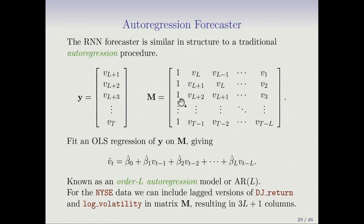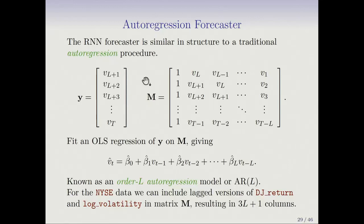We build up a model matrix with an intercept. For each VT, we have VT−1 as a feature, VT−2 as a feature, up to VT−L. Going to the next time point back, you get the same things one time step back, until the response VL+1 has features VL, VL−1, down to V1. This is a traditional autoregression setup using lagged versions of that sequence to predict the response. We can also augment this matrix with lagged versions of the Dow Jones return and the volatility measure.